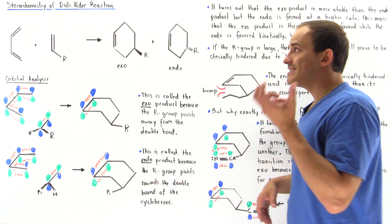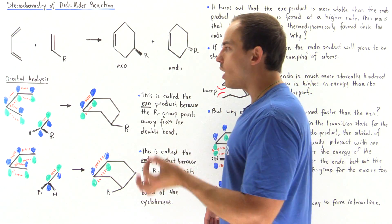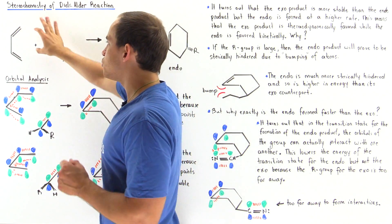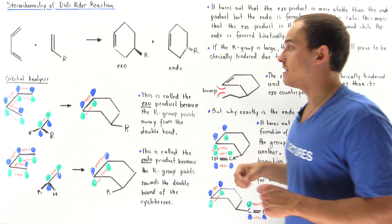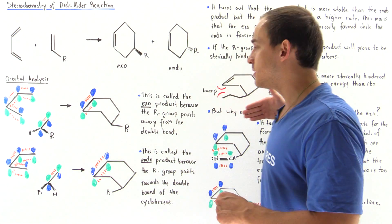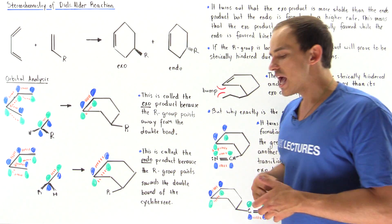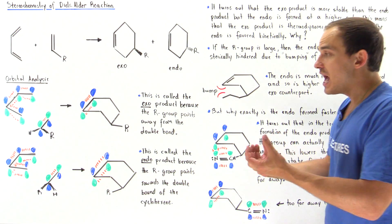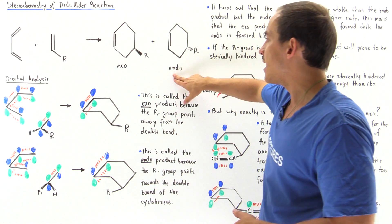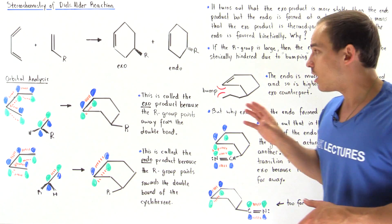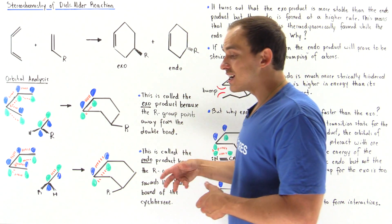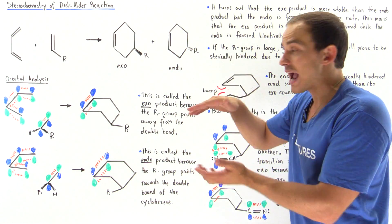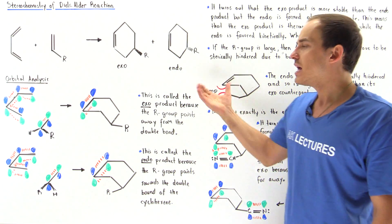In summary, the Diels-Alder reaction always proceeds via a one-step concerted mechanism, but two different products can form depending on how the dienophile approaches the diene. The exo product has the R group pointing away from the double bond; the endo has the R group pointing toward the double bond. Under thermodynamic conditions, where there is sufficient energy to overcome the larger activation barrier, the more stable exo product forms. Under kinetic control, where energy is limited, the pathway with lower activation energy is followed and the less stable endo product forms.